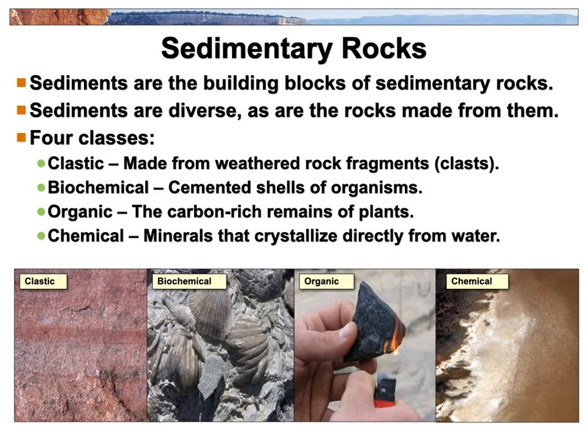The next class is the biochemical ones — cemented bits of shells and other organisms. You can see that clearly here: all these cemented shells together, including brachiopods you can find in the creek. Over on the left is sandstone, where there are little bits of sand, called clasts, all cemented together. The cement holding them could be silica, iron — it's red, so there's definitely some iron in there — or calcite, which would fizz if you put acid on it.